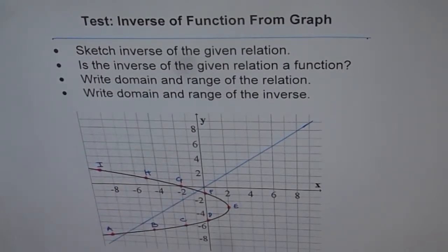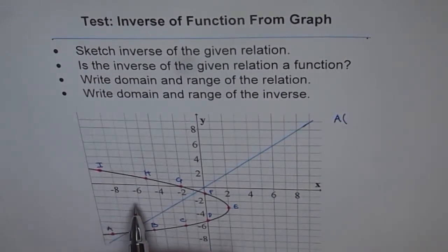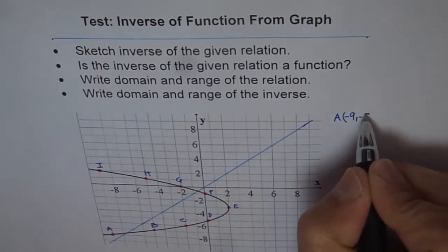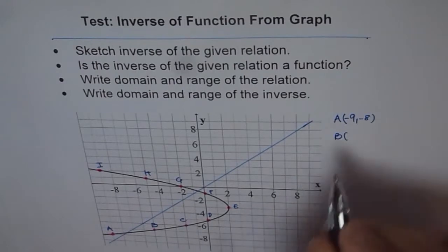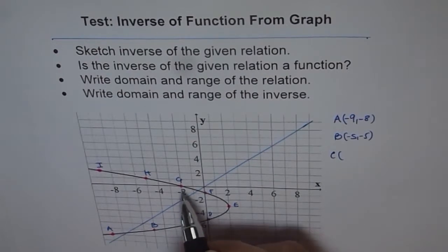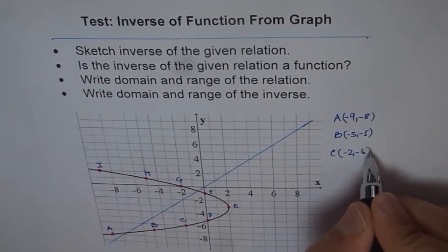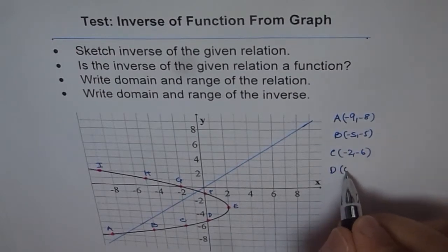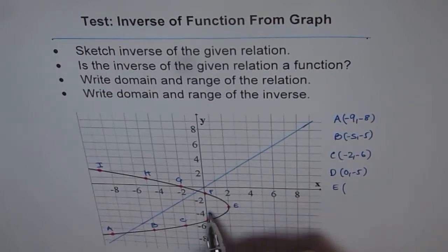So once you get coordinates of these points, you can write like this. You can write A as the coordinate of this which is minus 8, minus 9, minus 8. Point B is minus 5, minus 5. And point C is minus 2, minus 6. D is 0 and minus 5. And E on this side of the graph is 2 and minus 3.